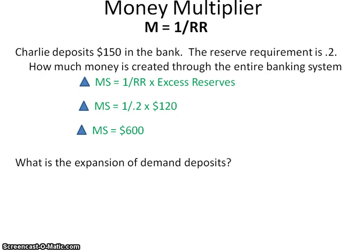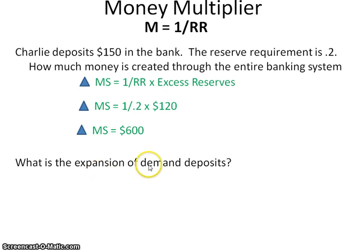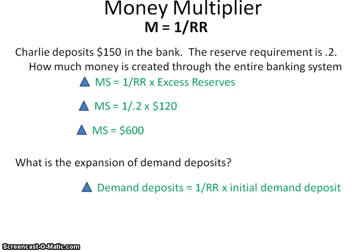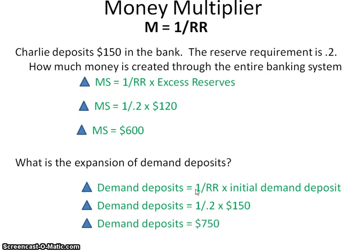Compare that to the question: what is the expansion of demand deposits? For this one, they want to know how much money is circulating within the banking system including that initial deposit. So the formula is 1 over the reserve requirement times the initial demand deposit. 1 over 0.2 is 5, times $150 gives a change in demand deposits of $750.